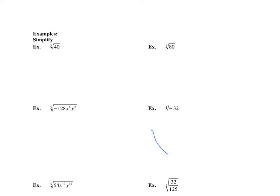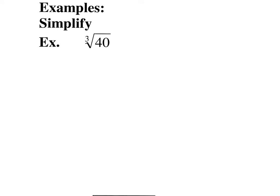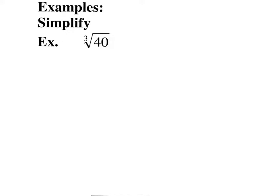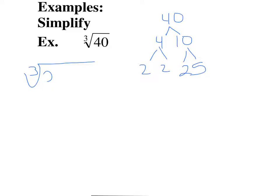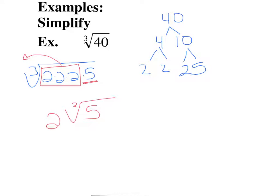Now these get a little more complicated because they're not perfect cubes or perfect roots. We're going to take 40, use a tree on it, and see what prime factors we get. We can write 40 as 2 times 2 times 2 times 5. Because the index is 3, we're looking for groups of three factors that match. This is a group of three 2's — every group of 3 can come out, so the cubed root of 2 times 2 times 2 is 2, but this 5 has to stay inside. It's a similar idea to square roots — you're just now looking for more factors to group together.